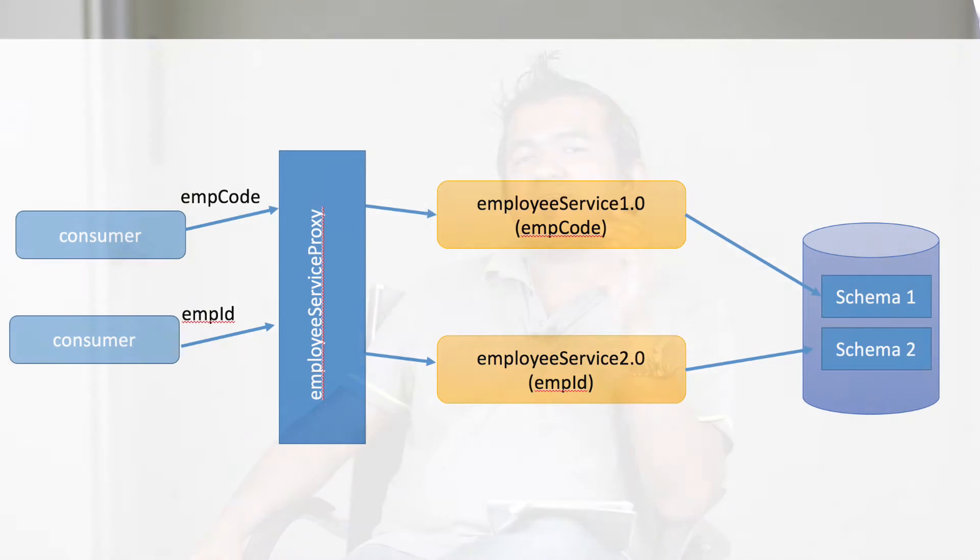So now with this proxy, you dedicate services to two different versions and direct the traffic. There is another thing involved, which is service discovery. Whenever you create this service, it is better to use an external party to discover the service for you. Why? Because with infrastructure changes, the hostname, IP addresses — everything can change.